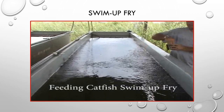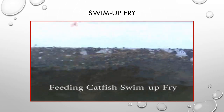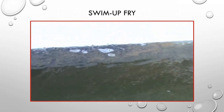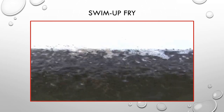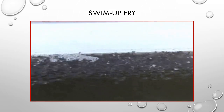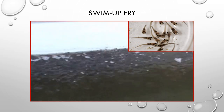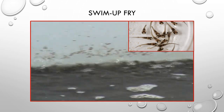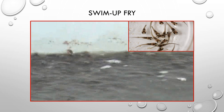Once counted, the sack fry are placed in a larger trough. Once the yolk sac is absorbed, the fish will begin to turn black and swim to the top looking for feed. At this point they're called swim-up fry. They are fed four to eight times a day until they grow strong enough to be put into the fingerling ponds.